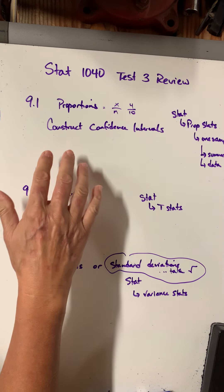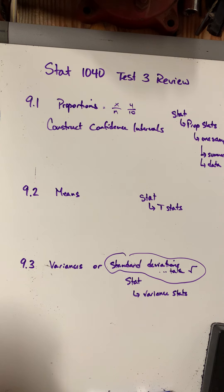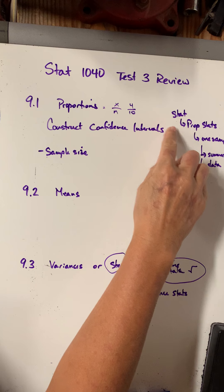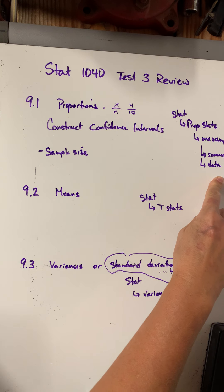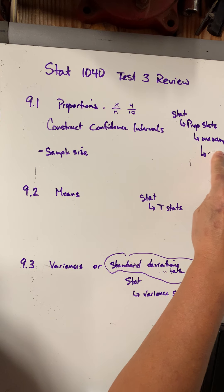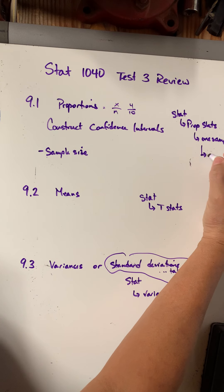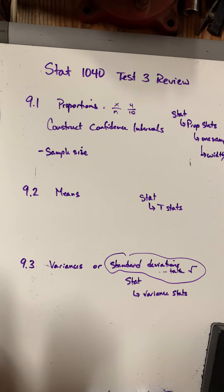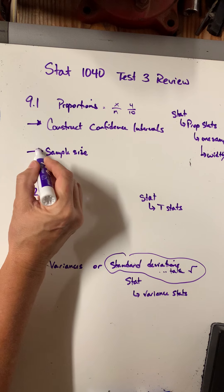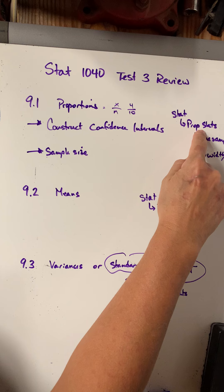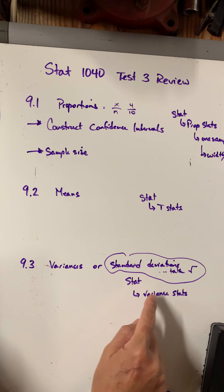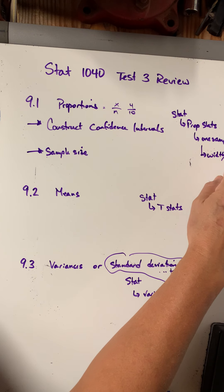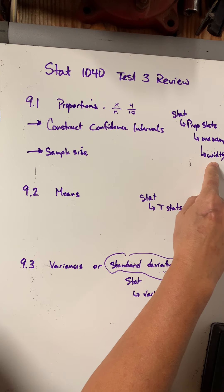Sometimes they'd do it backwards — they'd want you to determine the sample size, giving you the confidence interval, the width, and other details. You'd still go to the same stats menu, but instead of choosing 'with summary,' you'd go to the bottom selection, which said something like 'width/sample size.' For variance, I don't think they ever asked for sample size. So for proportions and means, they could ask you to construct a confidence interval or find the sample size.